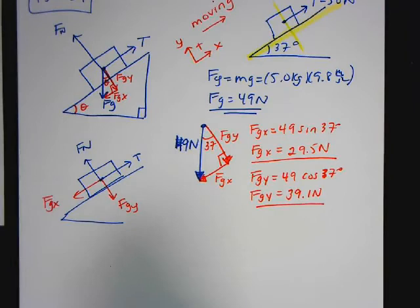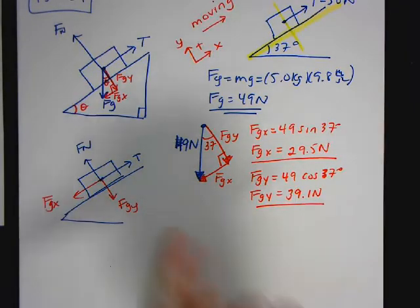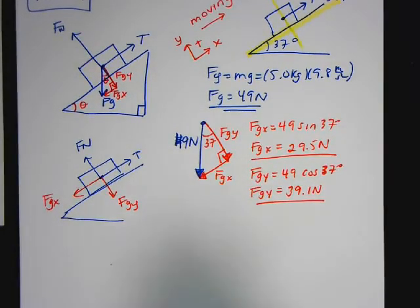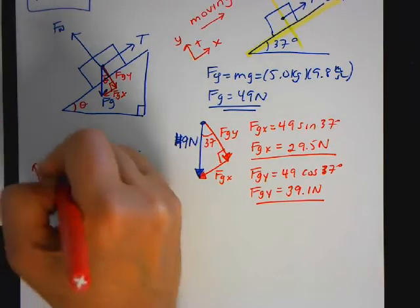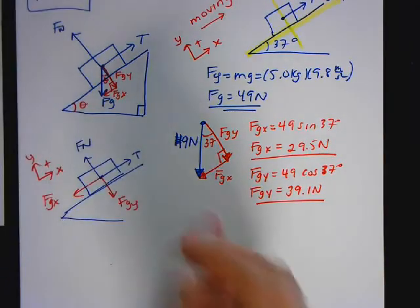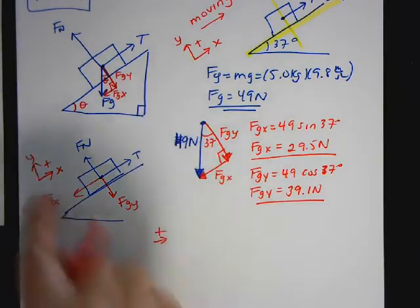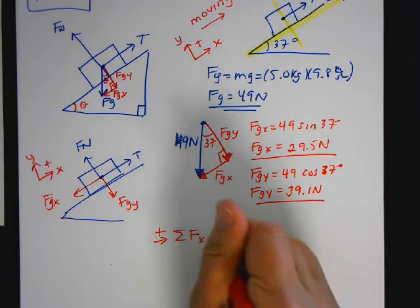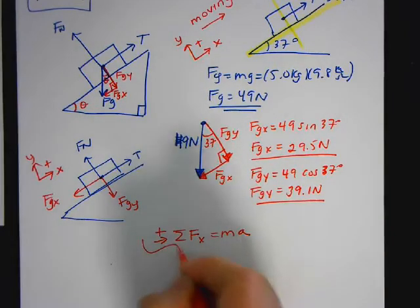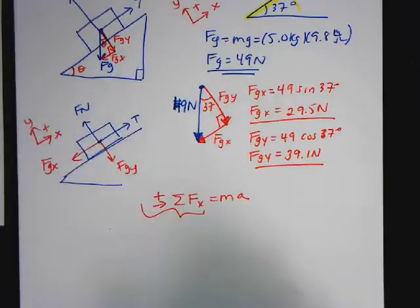So the problem has to find the acceleration. Well, acceleration is going in what I'm calling the X direction. So there's my sign convention. So I'm going to first write, I'm calling a positive, summation of F of X is equal to MA.